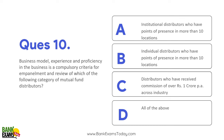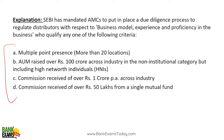Business model experience and proficiency in the business is a compulsory criteria for empanelment and review of distributors. This applies if a distributor earns commission over ₹1 crore per annum, has more than 20 locations, raises AUM over ₹100 crore, or earns ₹50 lakh from a single AMC. In such cases, the AMC must conduct due diligence on the distributor.